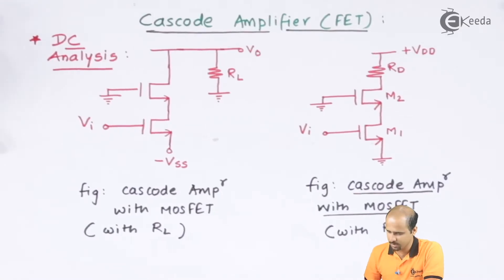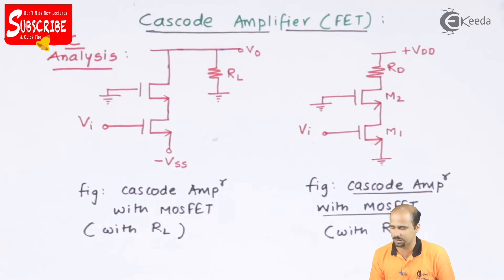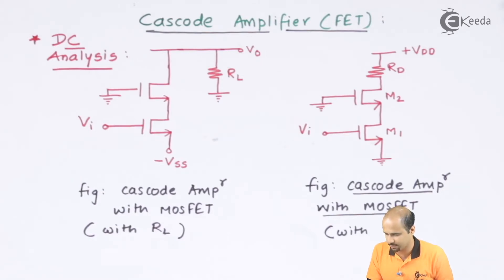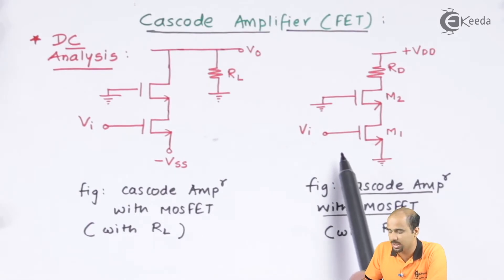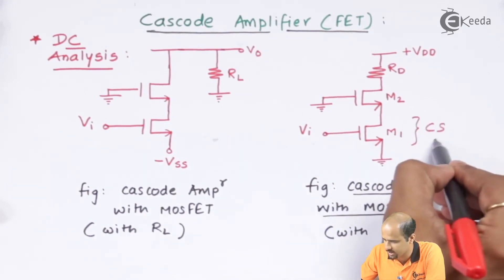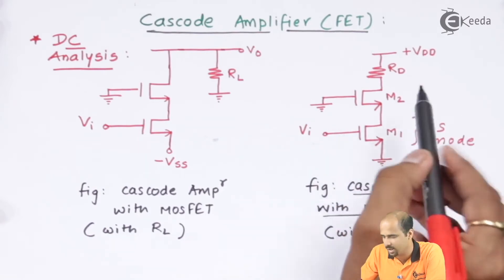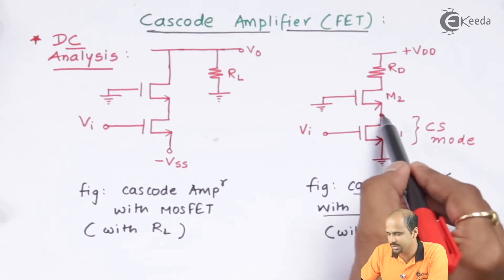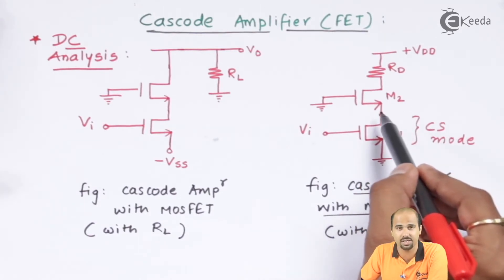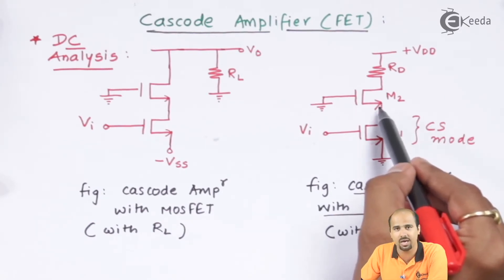In this particular circuit there can be many configurations depending on the application. I can draw many circuits using this cascode amplifier. According to the requirement, I have represented two configurations of this cascode amplifier. This particular mode is called the CS amplifier, where the output is connected to the drain terminal of the transistor.